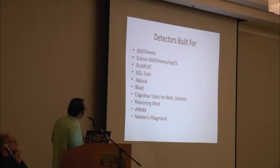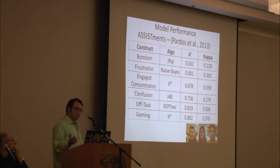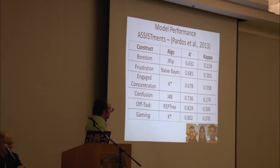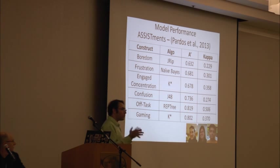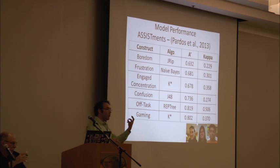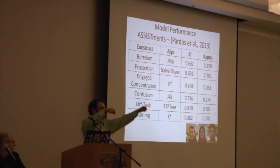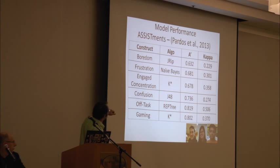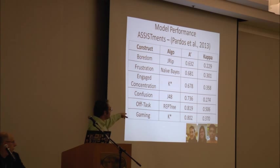We've built engagement detectors for 10 different online learning platforms. For the ASSISTments system — an online homework and classroom platform for middle school mathematics developed by Neil and Christina Heffernan at Worcester Polytechnic — the A-prime statistic tells you: if you have all the bored students in one urn and all non-bored students in another, take one from each, how likely will your model get it right? For boredom, we're able to tell 63% of the time — 23% better than base rate. For gaming the system and off-task behavior, we're in the low 80%.